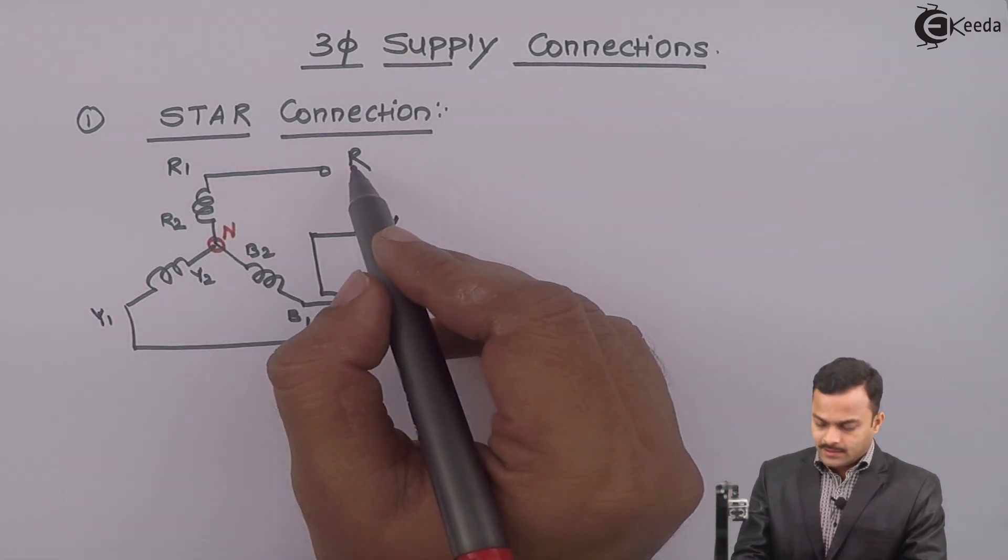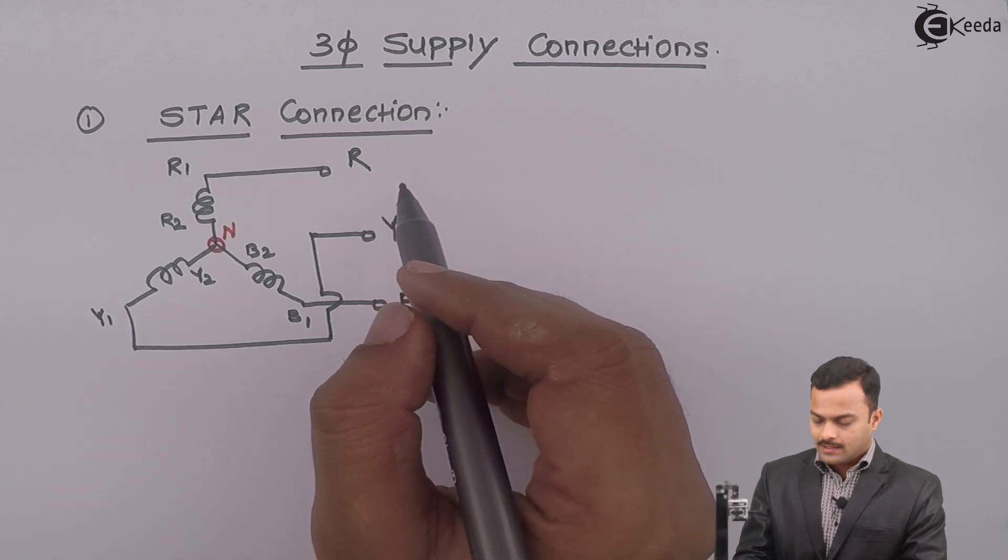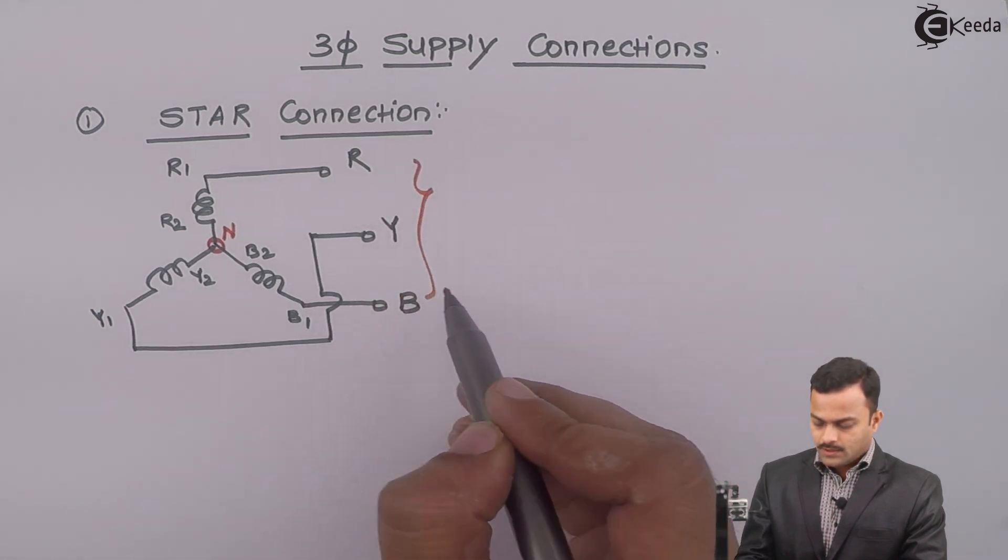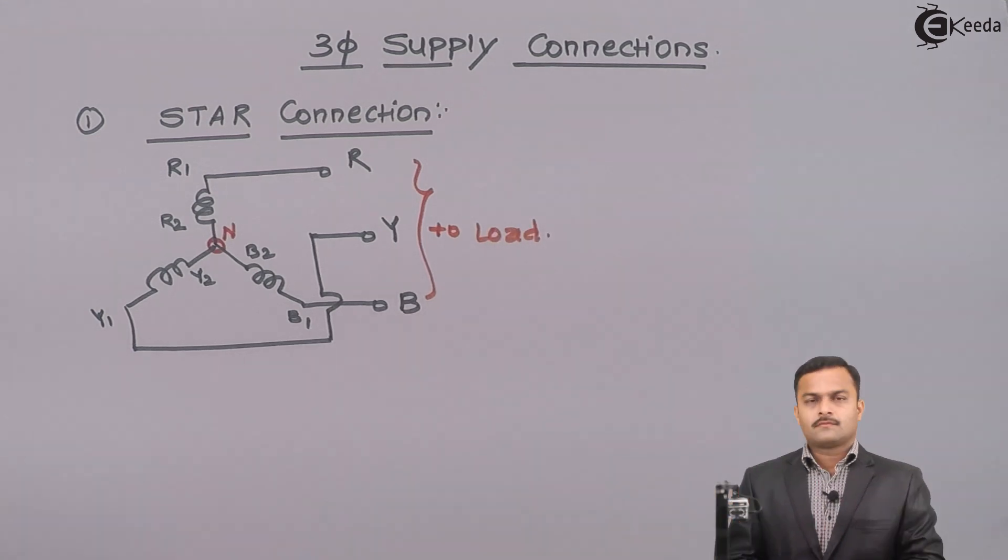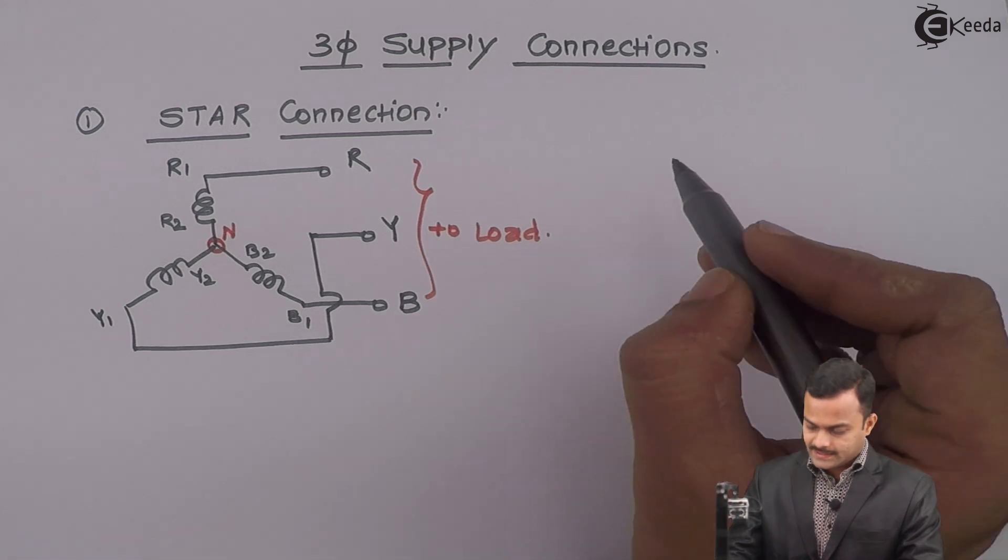And remaining ends are left for connection to load. One more structure of star will be like this.